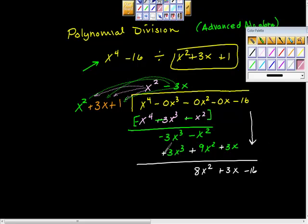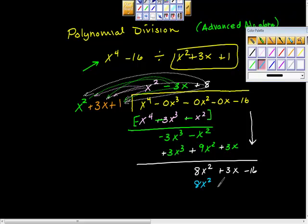Now what? Divide again. And we have 8x^2 divided by x^2, which is just 8. Now what? I'm going to multiply. What do we get here? 8x^2, plus 24x, plus 8.